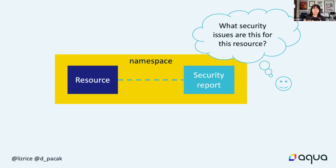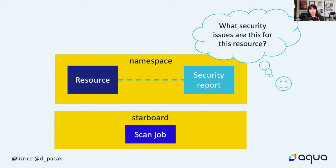When we first spoke with customers about Starboard, something they brought up very quickly was role-based access control. Generally speaking, Dave should only have access to the security information related to the resources that he has access to. So putting those reports in the same namespace as the resources makes our RBAC configuration pretty straightforward. Starboard needs to run jobs and we have to decide what namespace to run those jobs in. We decided to use a separate namespace for Starboard. First, it means Starboard doesn't need permission to run workloads in your application namespaces, which is better from the principle of least privileges - Starboard can only create jobs in its own namespace.